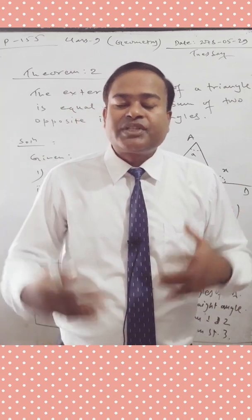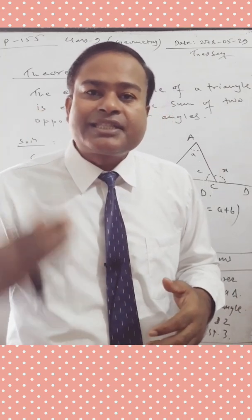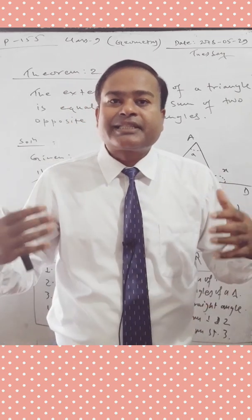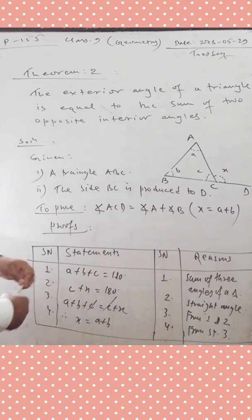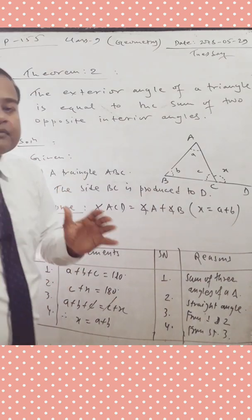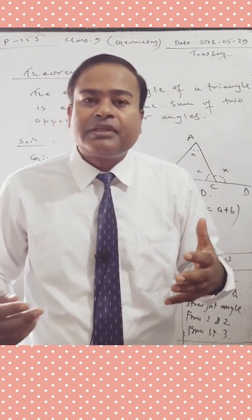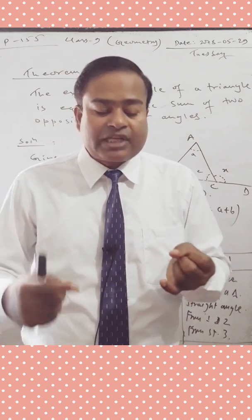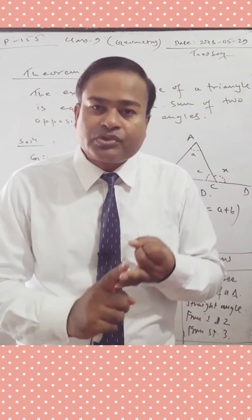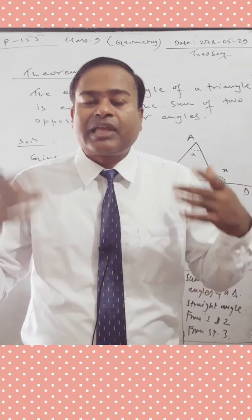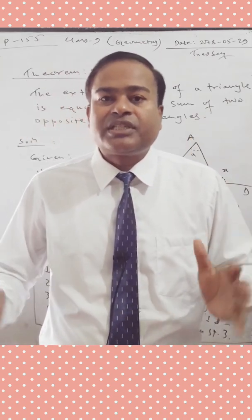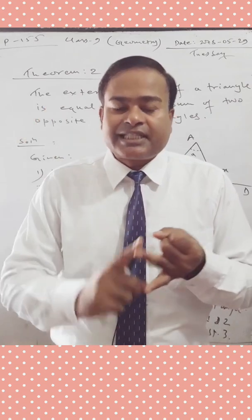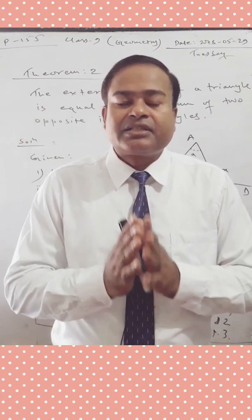Let's go through how to prove Theorem 2. In order to prove any theorem theoretically, we first write 'Given,' then 'To Prove,' then mention 'Construction' if there is one, and then write the 'Proof' — making a table with serial number, statements, and reasons.